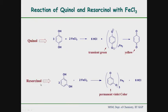For the second sample, resorcinol — this is actually 1,3-dihydroxybenzene. Take an aqueous solution of resorcinol and add ferric chloride drop by drop, one or two drops. You will observe a permanent violet color because of this complex, and this color is permanent. Unlike the transient green which lasts only a fraction of a second, for resorcinol you will observe a permanent violet color.